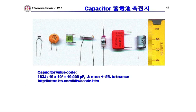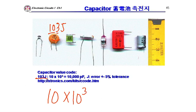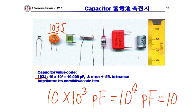For capacitor markings — for example, 103J means 10 × 10³ picofarads = 10 nanofarads, where J is the error bound of plus or minus 5%. This is similar to reading resistor codes — the numbers give the value in picofarads.